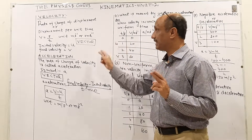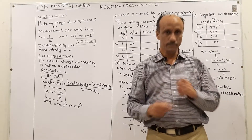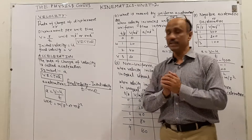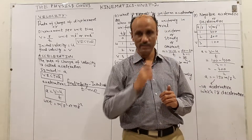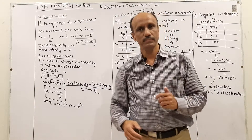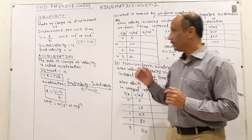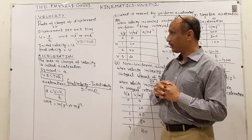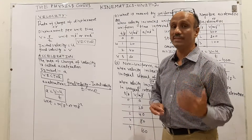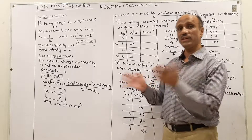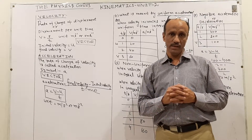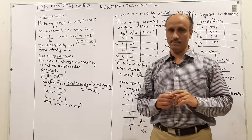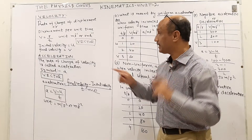The initial speed is represented by u while the final velocity is represented by v. Acceleration is the rate of change of velocity — velocity per unit time. Whenever there is a change in velocity with respect to time, that is called acceleration. When there is no change in velocity with respect to time, it means there is no acceleration.